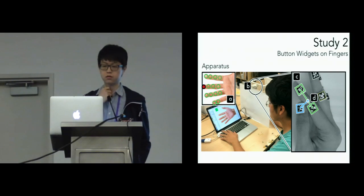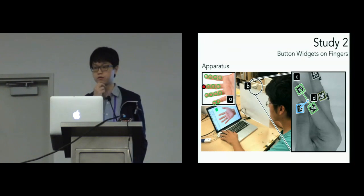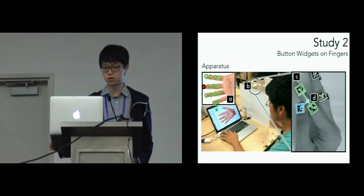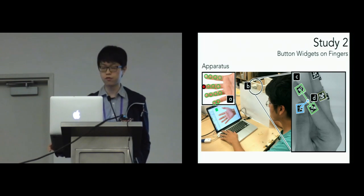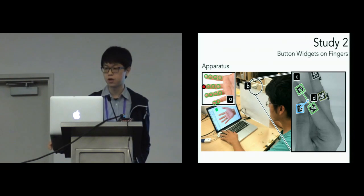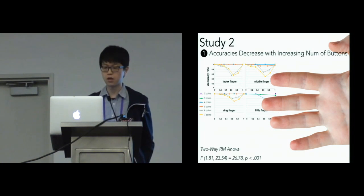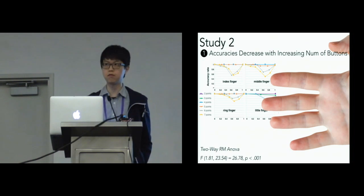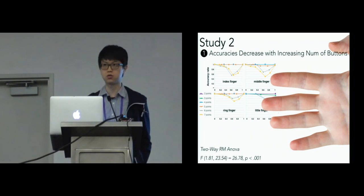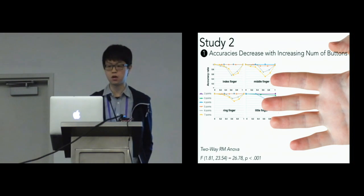We utilized an air matter for position checking — please refer to our paper for more details. Focusing on higher-level findings: we have three main findings in this study. After computing all accuracies of the button layouts, the first finding is that accuracy decreased with increasing number of buttons. This is understandable since tactile skin feedback has its own limitations — participants tend to be more confused when too many buttons are augmented on their fingers.